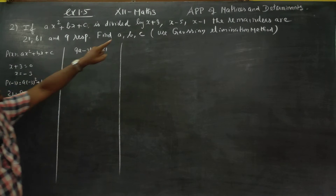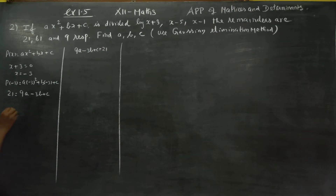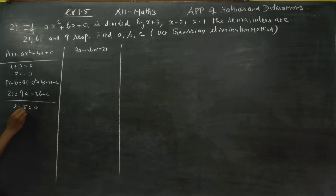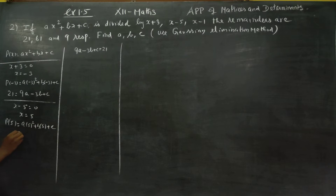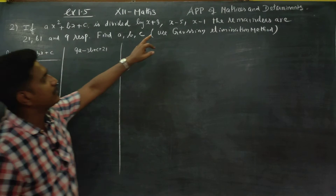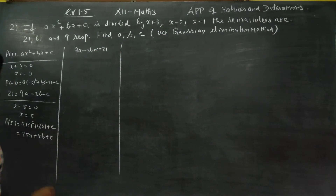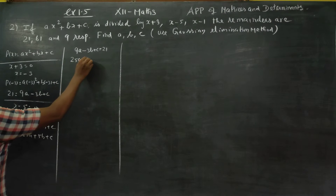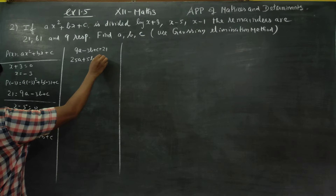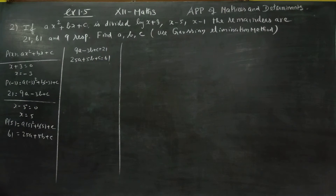For the second equation, dividing by (x-5): x-5=0, so x=5. Substituting: p(5) = a(5²) + b(5) + c = 25a + 5b + c. The second remainder is 61, so the second equation is: 25a + 5b + c = 61.